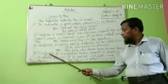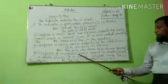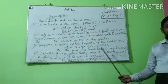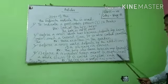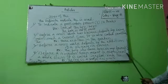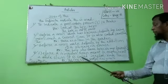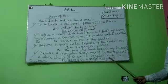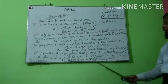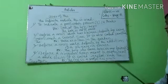Number four: before a singular noun to represent a whole class — it is called the generalizing THE. Example: The cow is a useful animal. Number five: before an uncountable noun to particularize it. Example: The gold of the ring is very pure. This is the definite article.